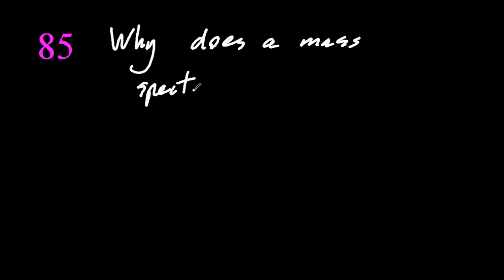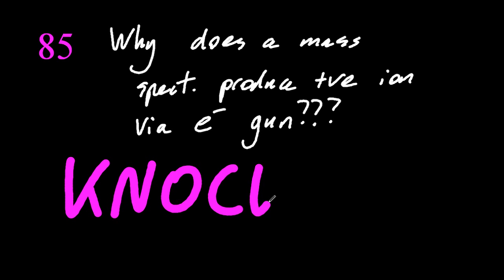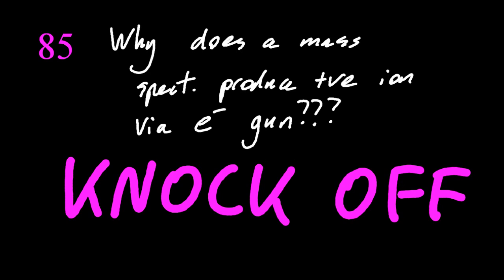How does a mass spectrometer produce positive ions by shooting something with negative electrons? How do you make something positive by shooting it with negatives? The electrons knock off other electrons. 86.